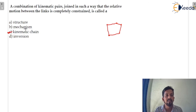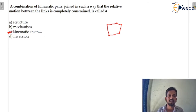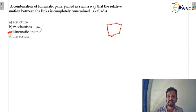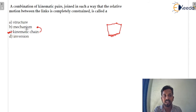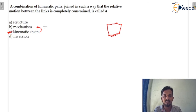If you are thinking why it is not a mechanism — it is not a mechanism because no link is fixed. For mechanisms, the kinematic chain must have one fixed link. If one link is fixed, then we will say this is a mechanism. So the difference between a kinematic chain and a mechanism is that in a mechanism, one link is fixed.